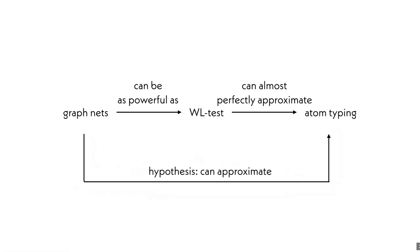So what we have here is that graph nets could be as powerful as Weisfeiler-Lehman test, whereas Weisfeiler-Lehman test can almost perfectly approximate atom typing. Naturally we can hypothesize that graph nets can approximate atom typing. If you want to be more specific, there is actually a corresponding relationship between graph nets with k layers and Weisfeiler-Lehman test with k steps to atom typing that looks at most n atoms away.